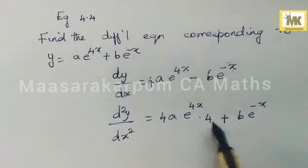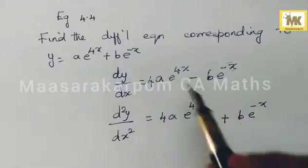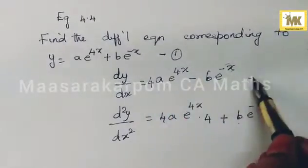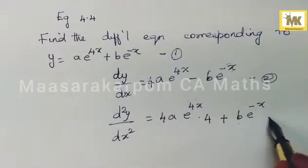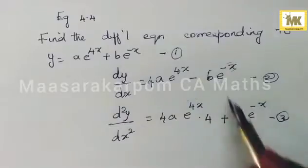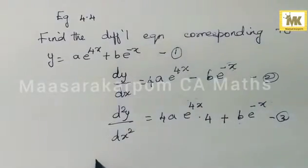After differentiating twice, now you have to frame an equation without a and b. First, add equations 2 and 3.